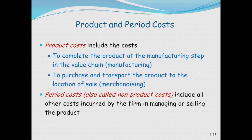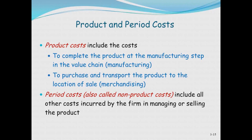Product costs are the costs to complete the manufacturing steps in the value chain and to purchase and transport the product to the location of sale. Merchandising companies like Macy's don't manufacture — they buy and then sell, so their product costs are the cost to purchase and get goods to locations. Period costs are everything that's not a product cost — all the other costs incurred in managing and selling the product.